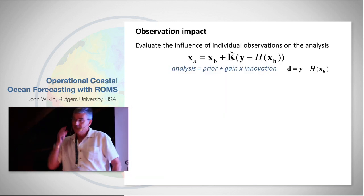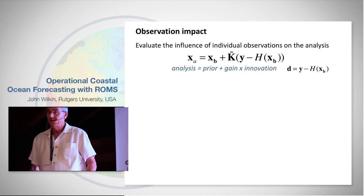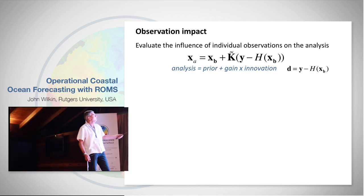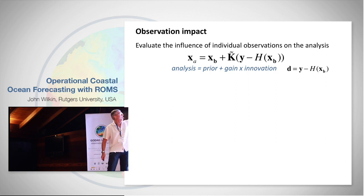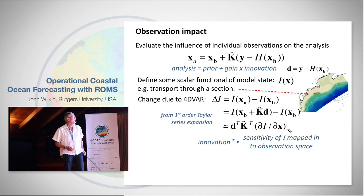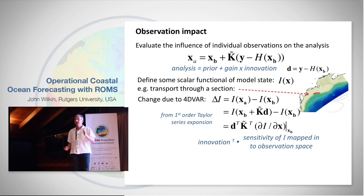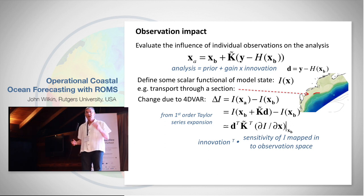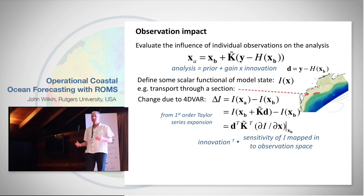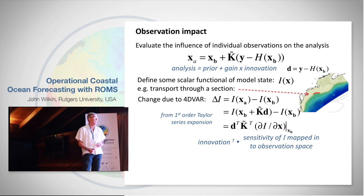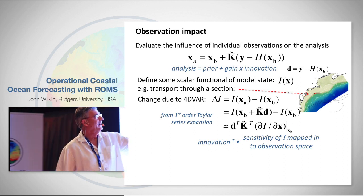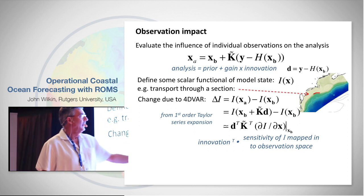We've got an observation impact driver inside ROMS 4D-Var. We're going to create a particular metric — a single number for each analysis interval — and ask how that number responds to the observations that went into the assimilation. You pick something relevant for an end user or societal/scientific objective: it's going to be a scalar I that's a function of the model state. In this example, it's the cross-shelf heat flux on a three-day average through a line in the middle of the Pioneer Array.